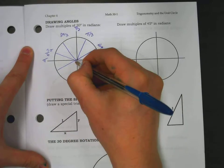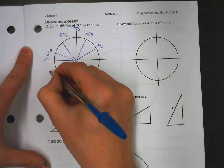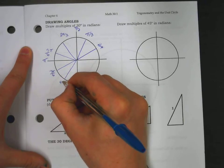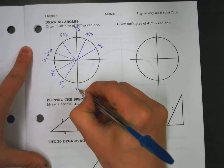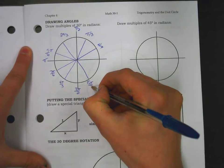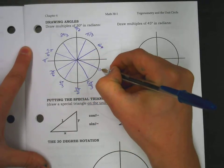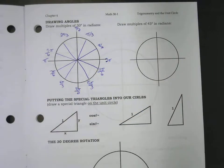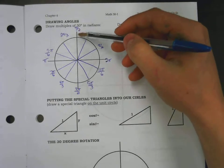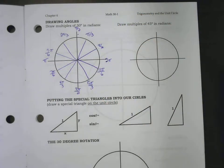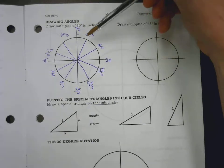Continuing: 6π/6, 7π/6, 8π/6, 9π/6, and so on. As you rotate around, those are your values — 30, 60, 90, and every multiple of 30, technically every multiple of 60 as well.